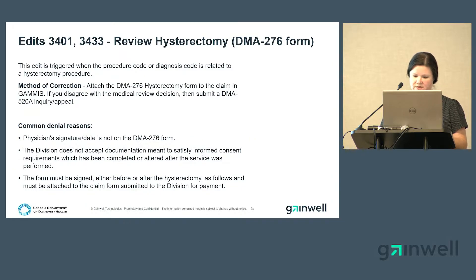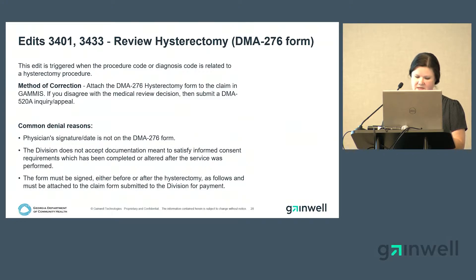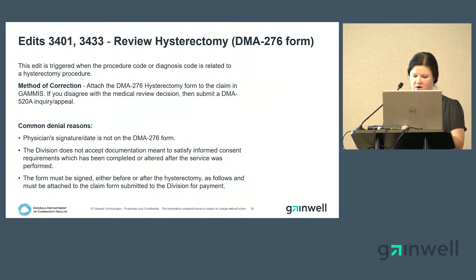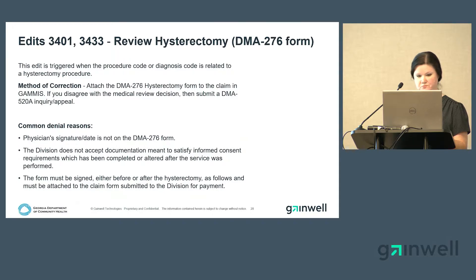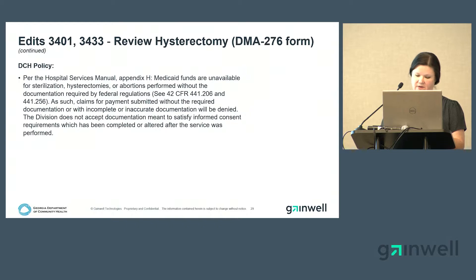This edit is triggered when there is a hysterectomy procedure code or diagnosis code on the claim. Method of correction is to attach the DMA 276 form to the claim in GAMIS. If you disagree with the medical review decision, submit a DMA 520A appeal. Common denial reasons include the physician's signature or date is not on the DMA 69 form, documentation was completed or altered after the service was performed, and the form must be signed either before or after the hysterectomy and attached to the claim form submitted to the division for payment. Claims submitted without the required documentation or with incomplete or inaccurate documentation will be denied.